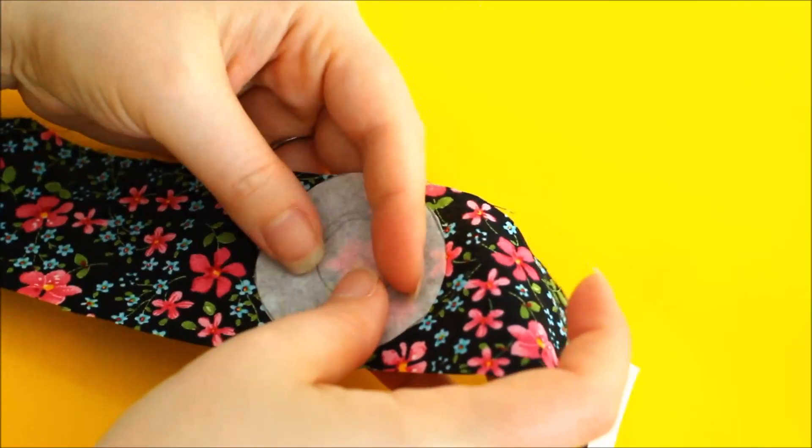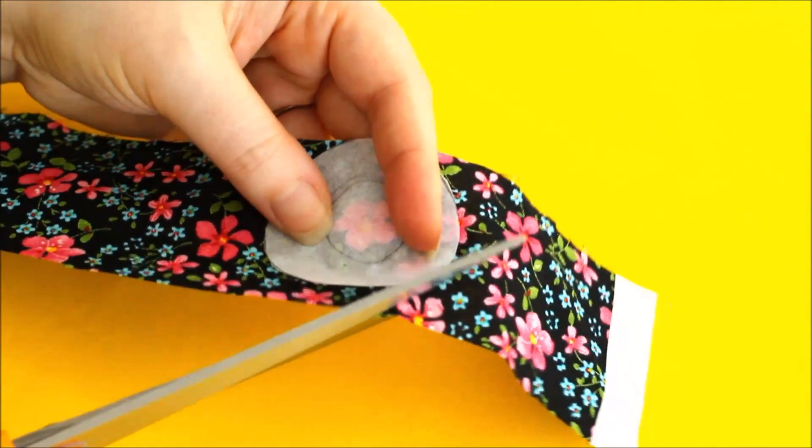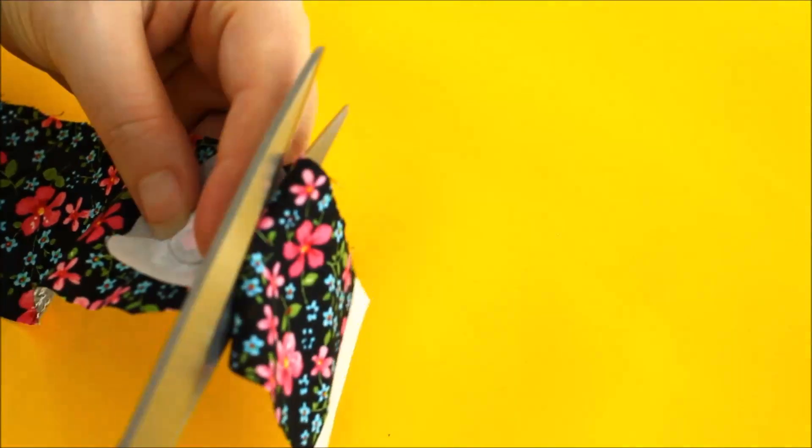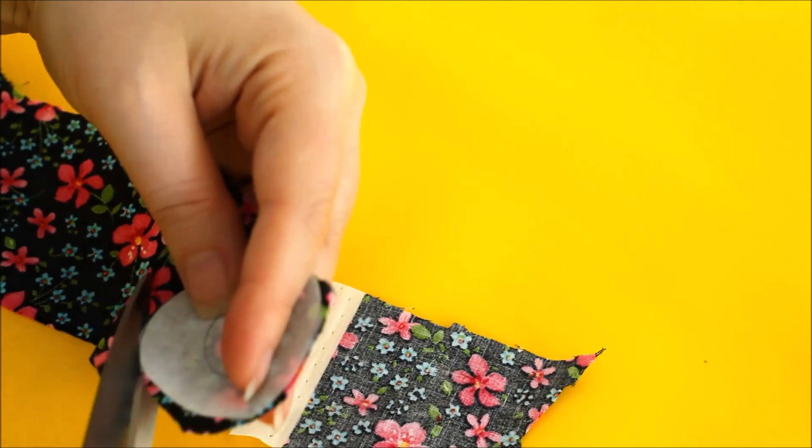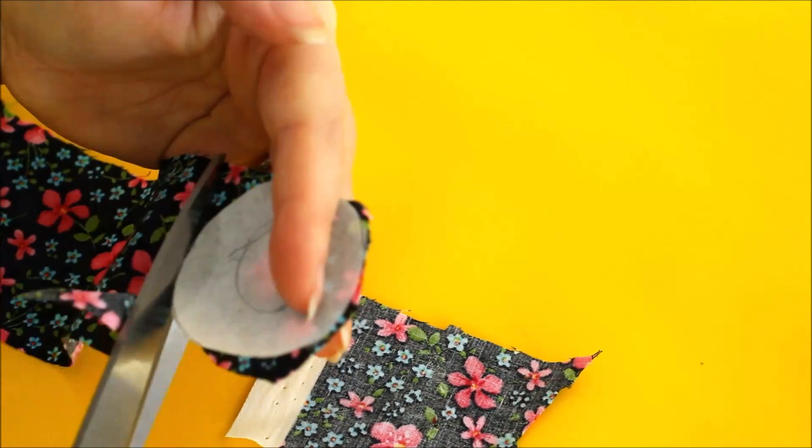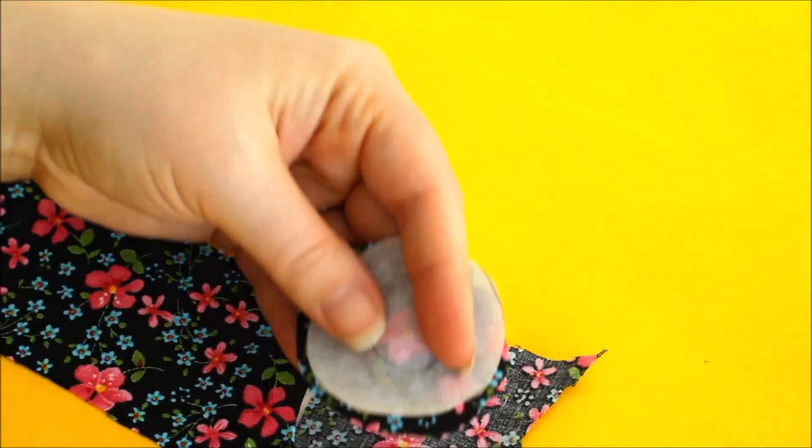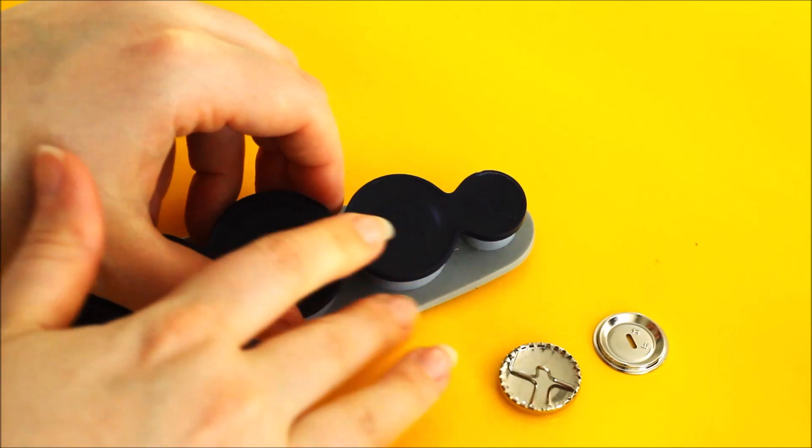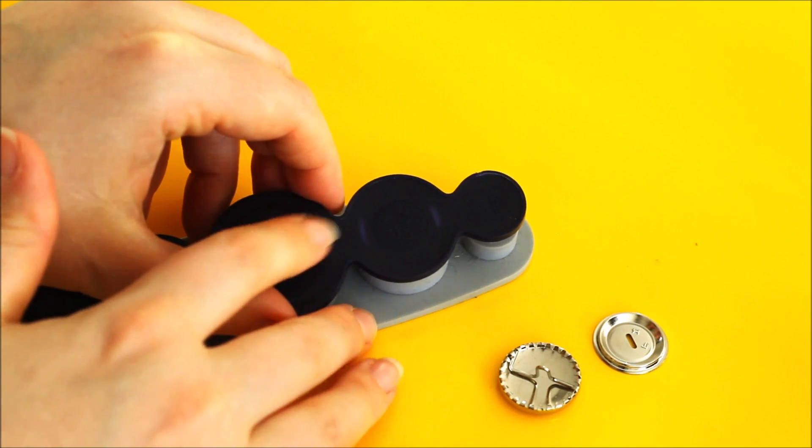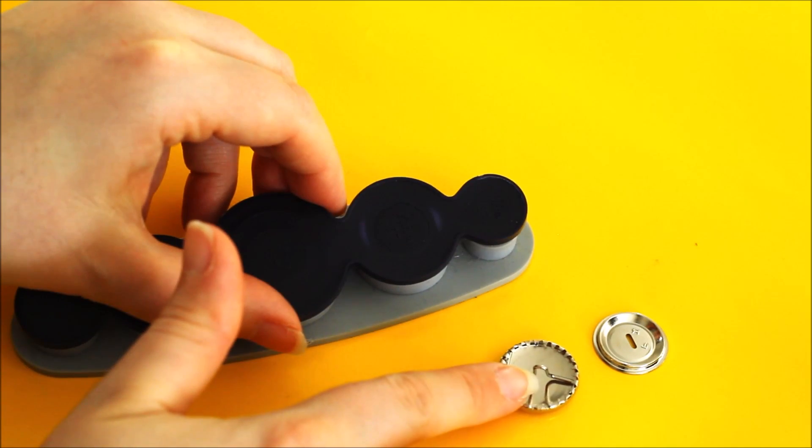Now you can pin it, but it isn't really necessary because it doesn't have to be a completely perfect circle. So you open up your button tool. On the back it says the sizes of the different buttons. So we're going to want this one. It says 23mm, which is the same as our button here.